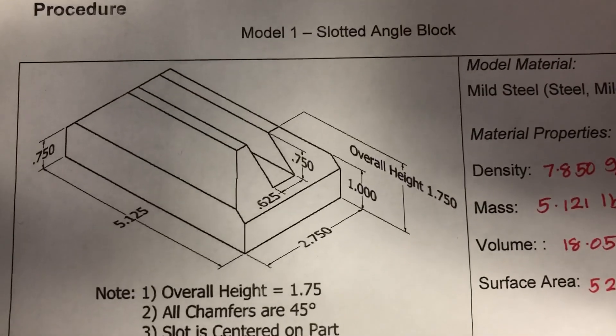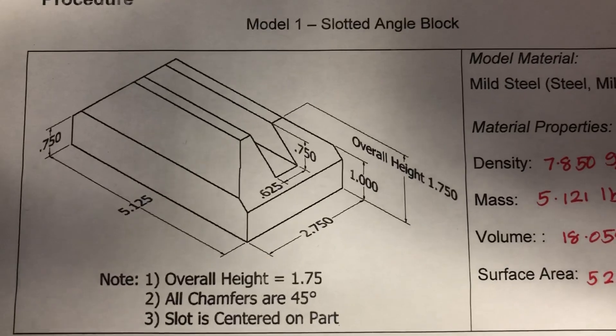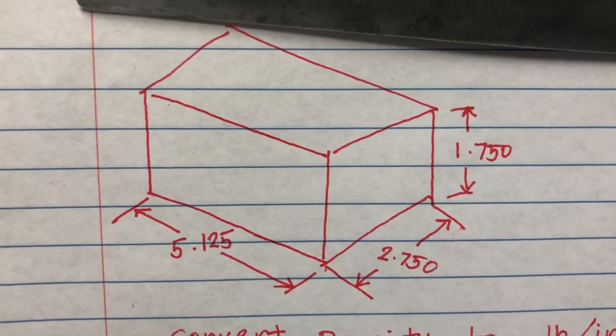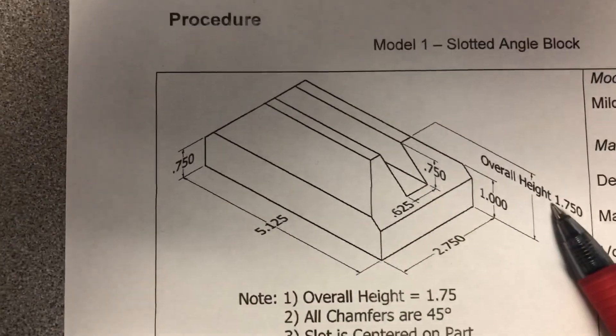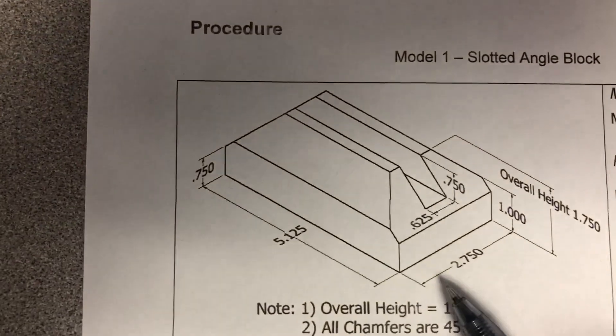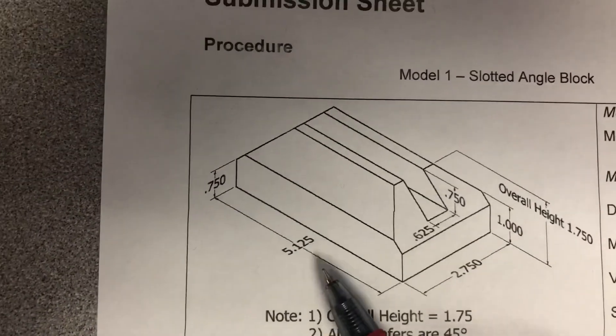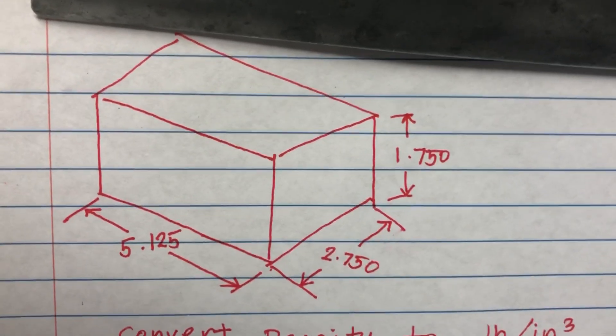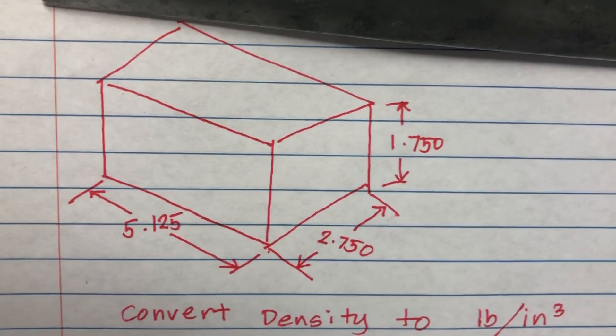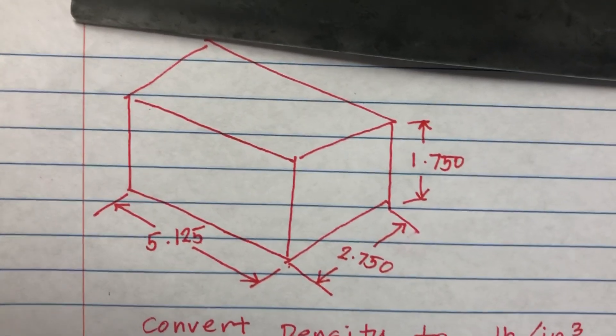We need to find out what the cost of producing this product from the block would be. The overall height, width, and length were given, and from those dimensions I was able to deduce that the block is the raw material.